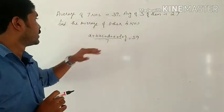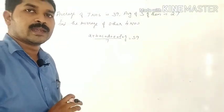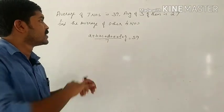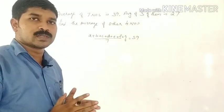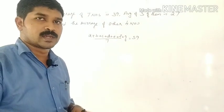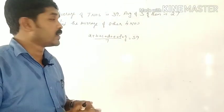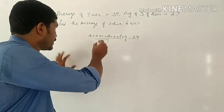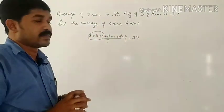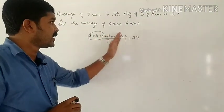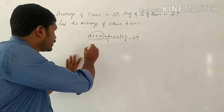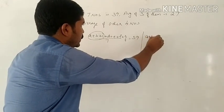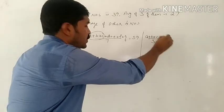The first part: the average of seven numbers is 39. The average of three numbers is 27. Let's look at which three numbers we select. We take three numbers — A plus B plus C — and their average divided by 3 is equal to 27.